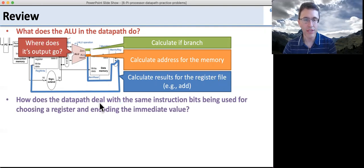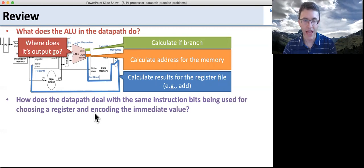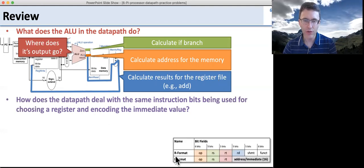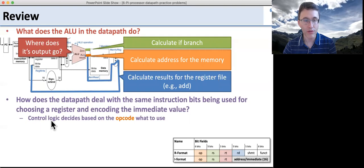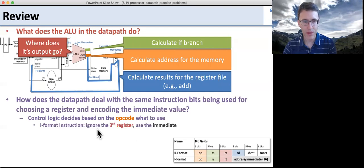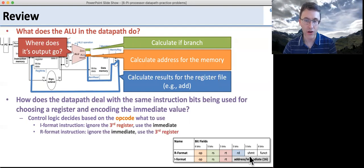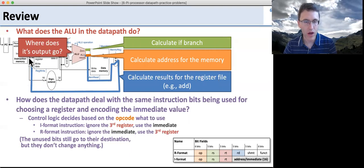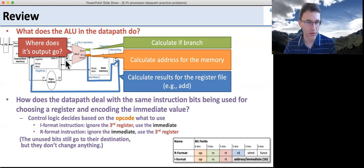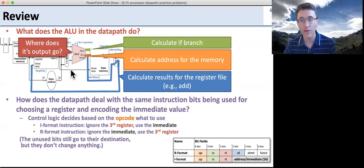Second question: how does the data path deal with the same instruction bits being used for choosing a register and encoding the immediate value? Looking at the R and I instruction encoding formats, the same bits are used either for encoding a register or encoding an immediate. The control logic looks at the opcode and figures out what to do. For an I format instruction, we ignore the third register and use the immediate instead. For R format, we don't use it as an immediate — we just use our third register. Keep in mind that either way, the bits still move around; the control logic turns off the parts of the data path that would use them.